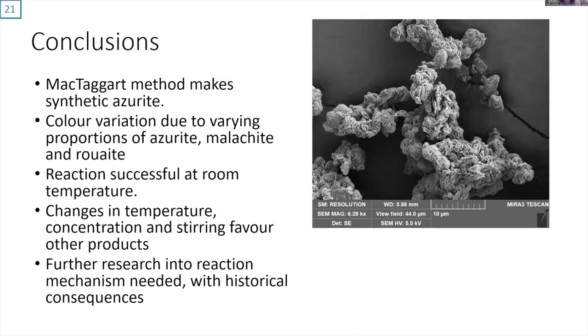To summarize, we found that the McTaggart method successfully makes synthetic azurite, but the color variation is due to varying proportions of azurite, malachite, and ruite. We found that the reaction is successful at room temperature, contrary to the McTaggart report, but that changes in temperature, concentration, and stirring favor other products. Further research is needed into the reaction mechanism, which can have historical consequences. We were only starting to discover how complex this system is, and hopefully further work will bring some clarity. Thank you very much for your attention.